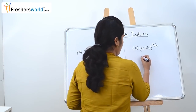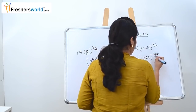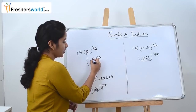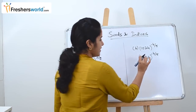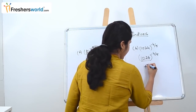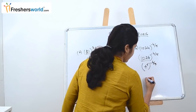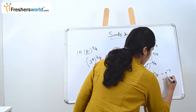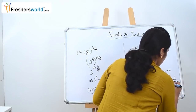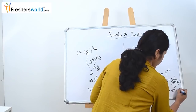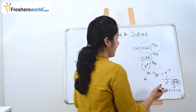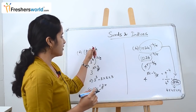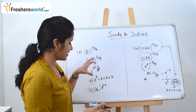Let's take another example. They have given 1024 the whole power minus 4 by 5. What is 1024? I know it is nothing but 4 power 5. So 4 power 5, the whole power minus 4 by 5, gives 4 power 5 into minus 4 by 5, which is 4 to the power minus 4. That can be written as 1 by 4 power 4, which is 1 by 256. So 1024 to the power minus 4 by 5 simplifies to 1 by 256. Just see how the number can be expressed as a power that cancels with the given exponent.